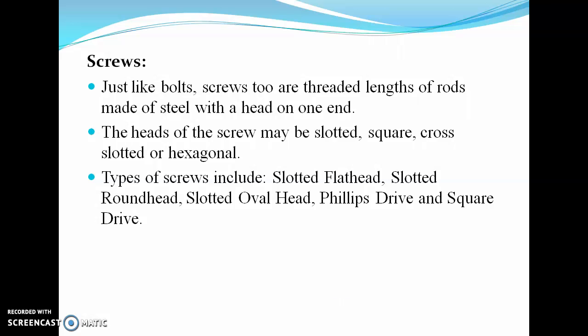Screws, just like bolts, are threaded lengths of rods made of steel with a head on one end. The head of the screw may be slotted, square, cross, or hexagonal. Types of screw include slotted flat head, slotted round head, slotted oval head, Phillips drive, and square drive. These are the various examples of fasteners.